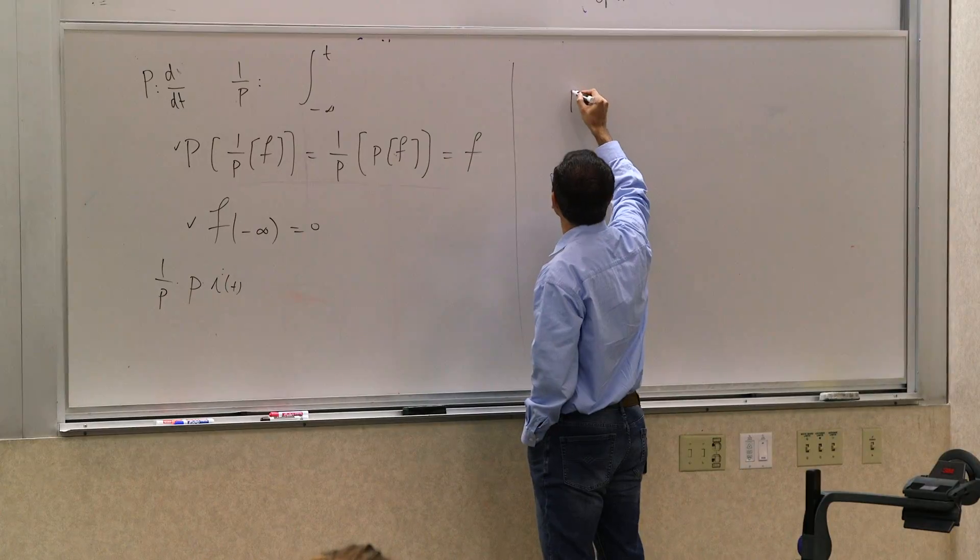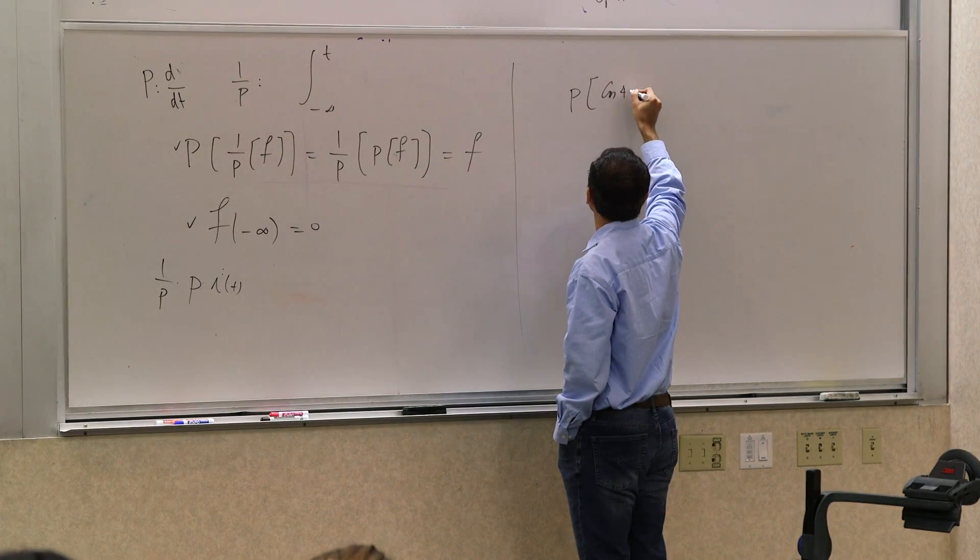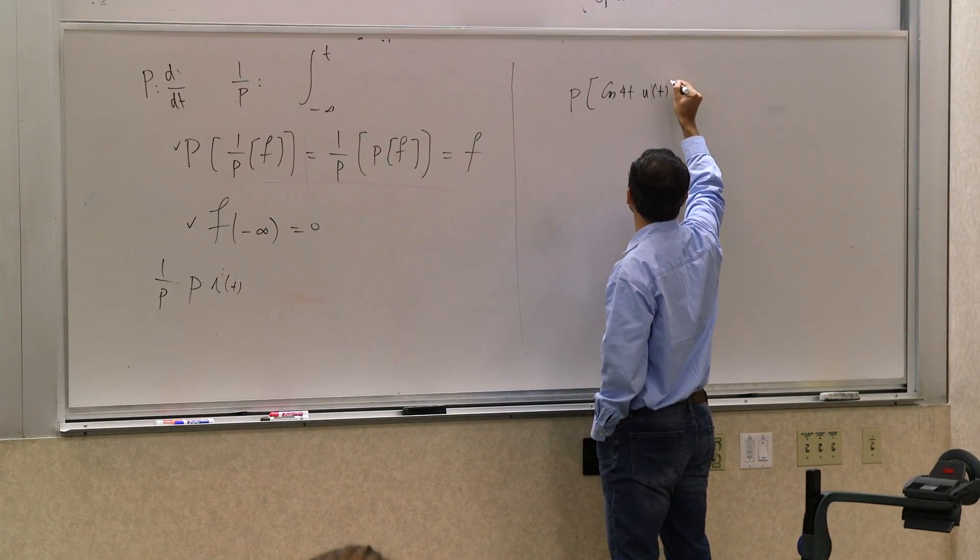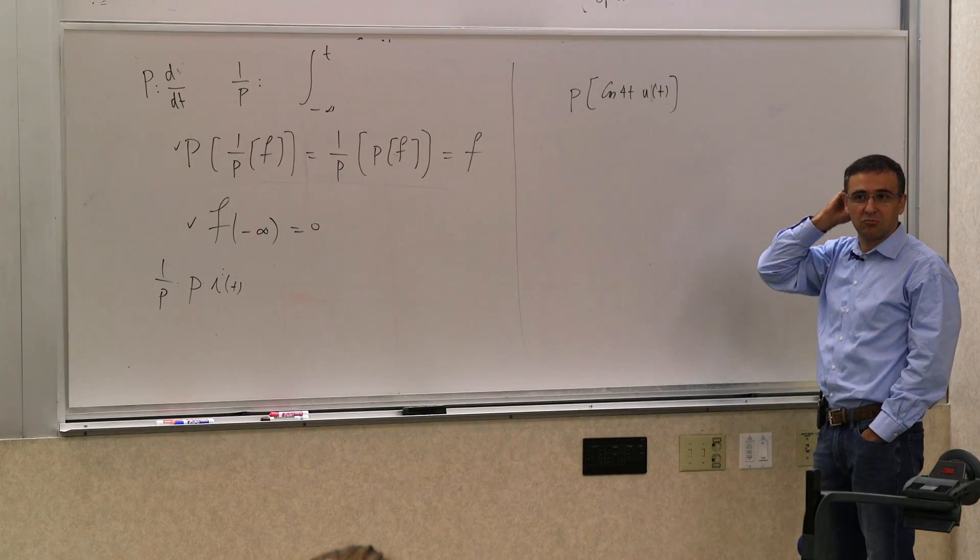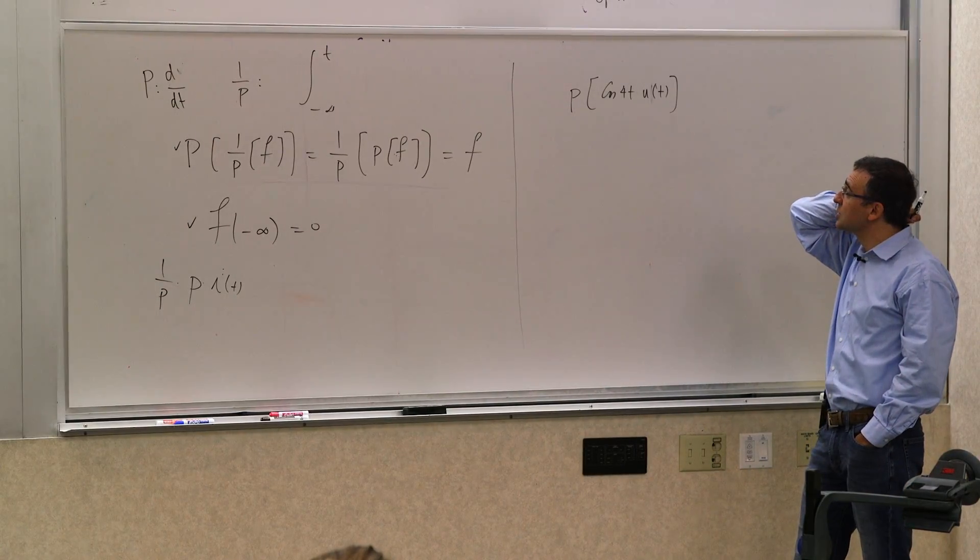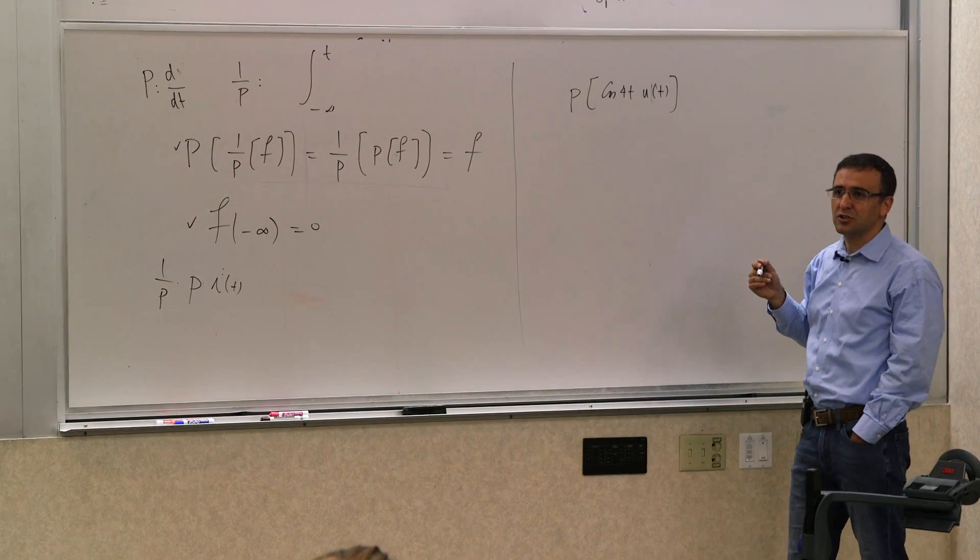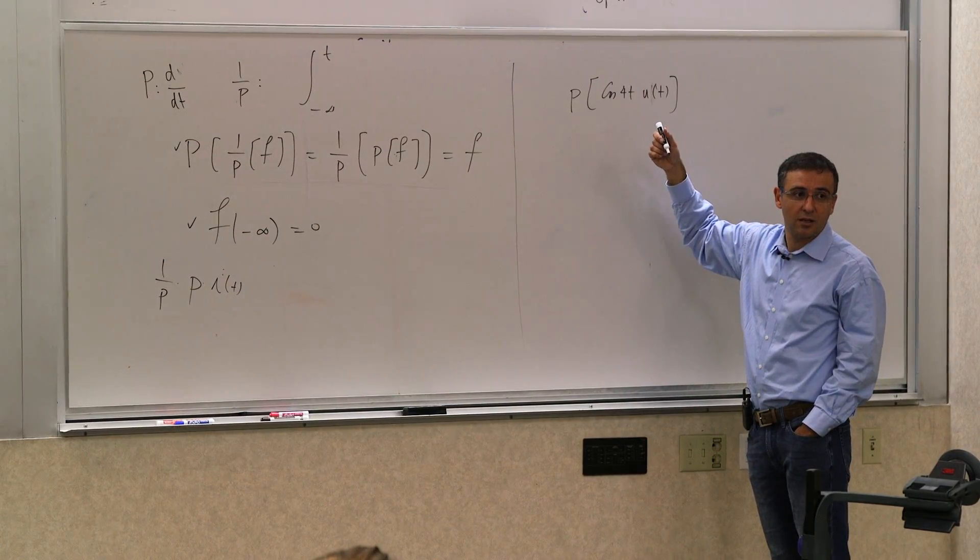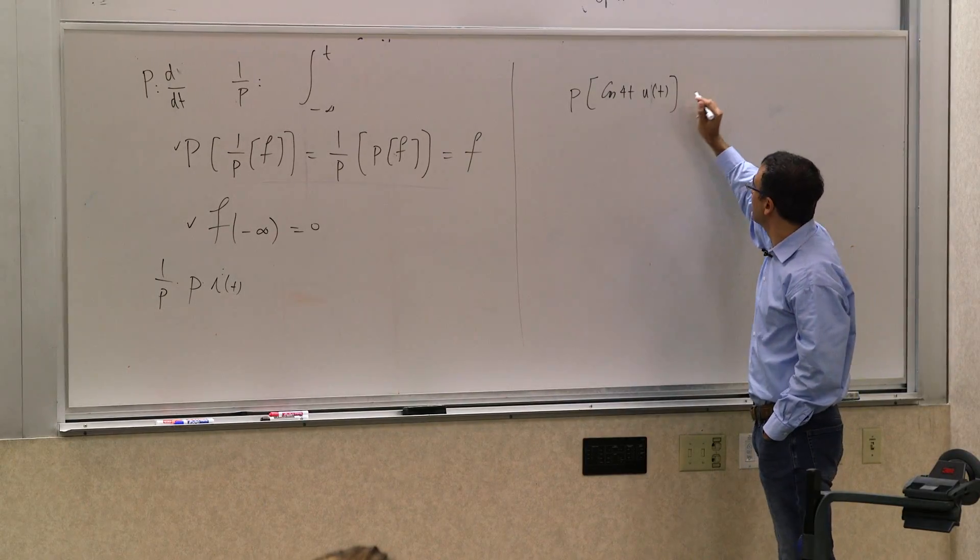So let me just do two quick examples before we wrap this up. So let's say I want to see what is p of cosine of 4t u(t). What is this function? What is p of cosine of 4t times u(t)? Let's say differentiation of this, right? The derivative of this. So what is the derivative?